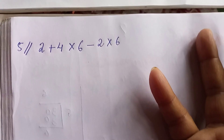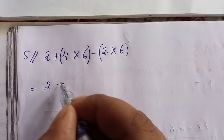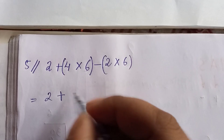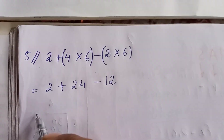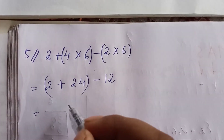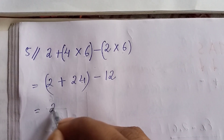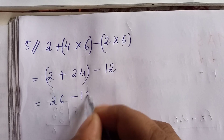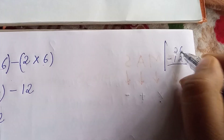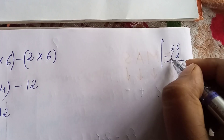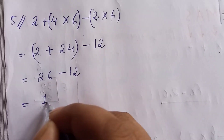For the next question, there is no division so we go to multiplication. We do the two multiplications together. Then addition: 24 plus 2 equals 26. Then subtraction: 26 minus 12 — 6 minus 2 is 4, 2 minus 1 is 1 — answer is 14.